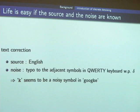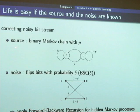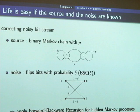Life is easy if the denoiser knows both the source and the noise. In the text correction problem, if a text corrector knows the text is English and knows how typos are made, it can figure out that a letter is noisy and replace it with the most probable word. In the binary case, if the source is a binary Markov chain with transition probability p, and noise flips bits independently with probability delta, the resulting noisy sequence is a hidden Markov process. There exists an optimal scheme called the forward-backward recursion which can minimize the bit error rate. This setting of known source and noise models is called the Bayesian setting.